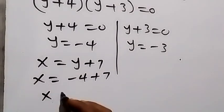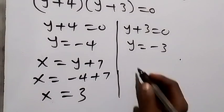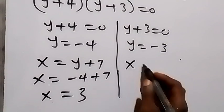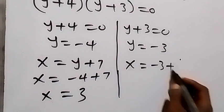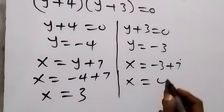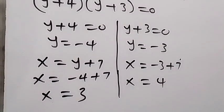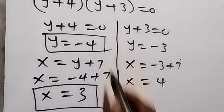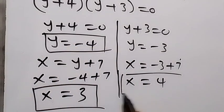On this side also, we use x equals y plus 7 from here. So we have here x equals 3, y equals minus 4, and x equals 4, y equals minus 3.